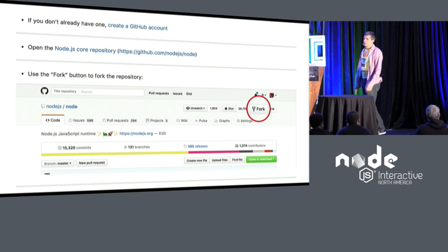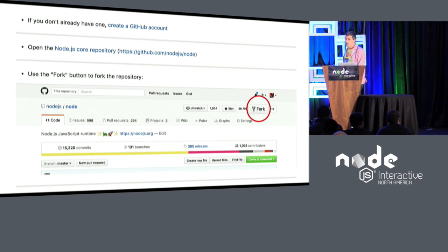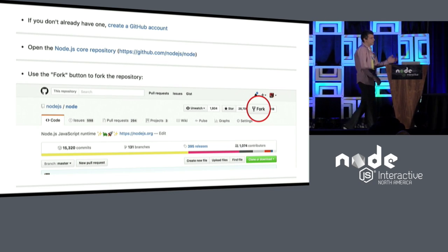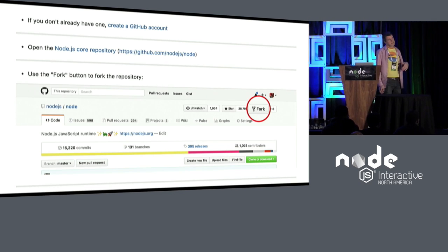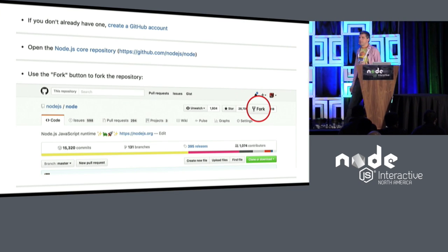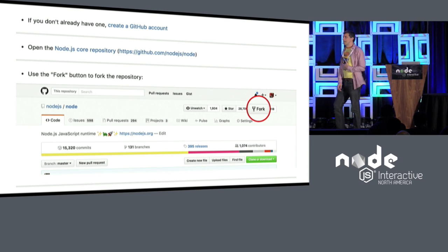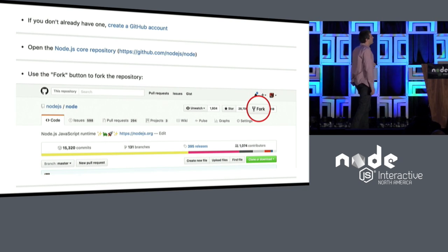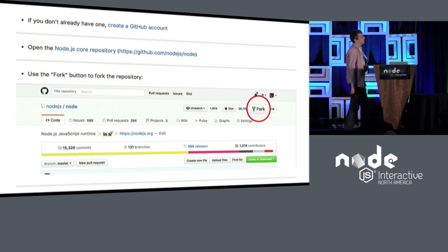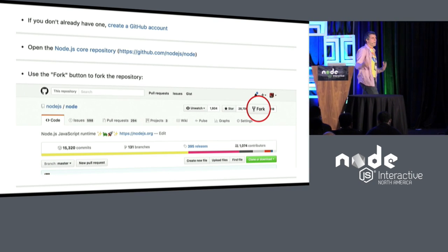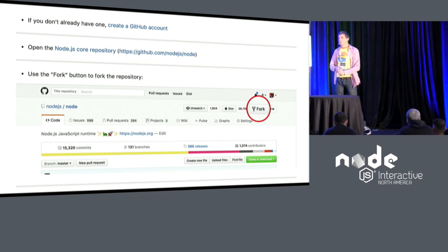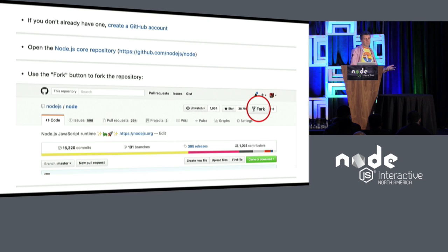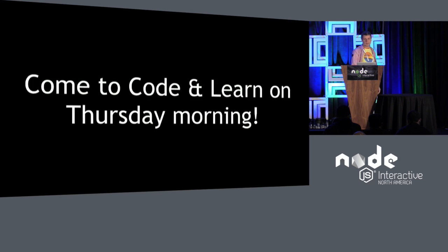If you don't already have a GitHub account, create one. If you haven't forked the Node.js repo, fork the repo. It takes you through the steps to clone, then build and run tests. At the end, after you've run your tests, it suggests sending an email or tweeting at us — we'll give you a manageable good first contribution to improve the code base, and hopefully get you hooked so you start finding your own issues.